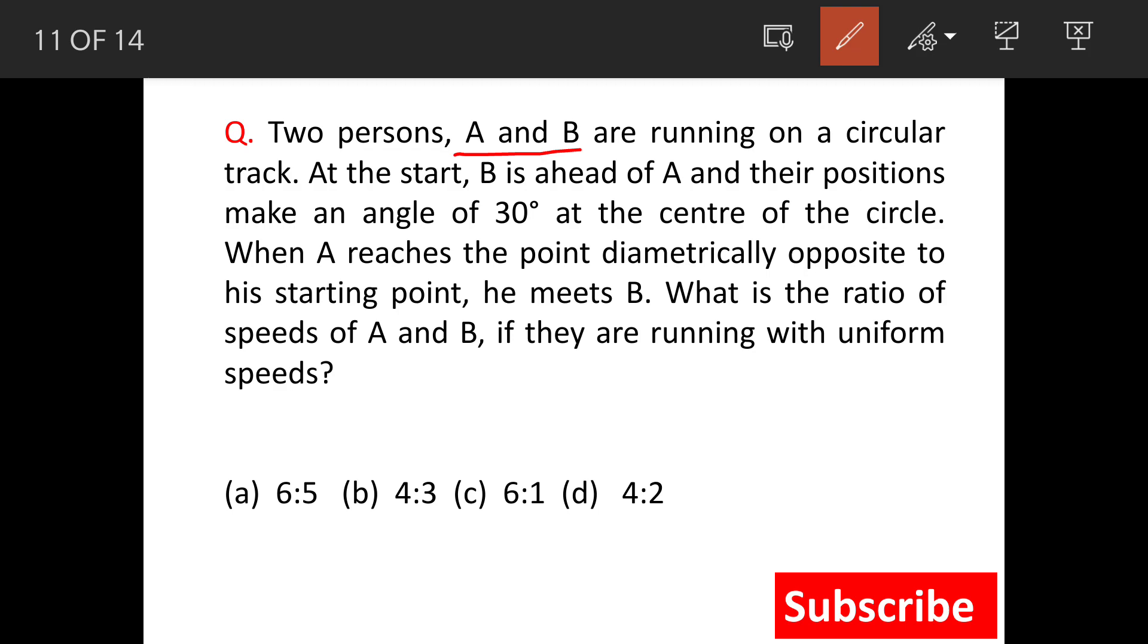Two persons A and B are running on a circular track. At the start, B is ahead of A and their positions make a 30 degree angle at the center of the circle. When A reaches the point diametrically opposite to his starting point, he meets B. What is the ratio of speeds of A and B if they are running at uniform speeds? These are the options given. We'll see the solution now. Point to note here is uniform speeds.